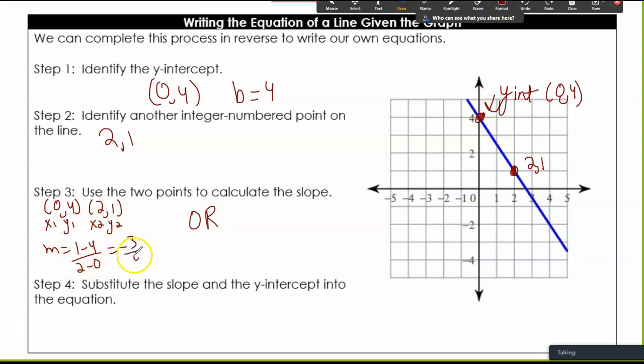I get negative 3 over 4, or I can think of rise over run. So down, I can think of it this way. This is down 3, right 2.